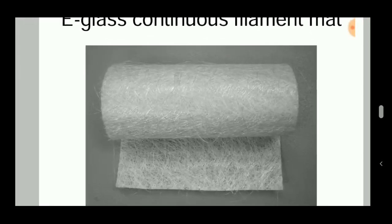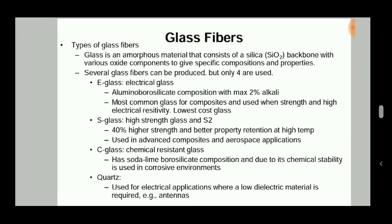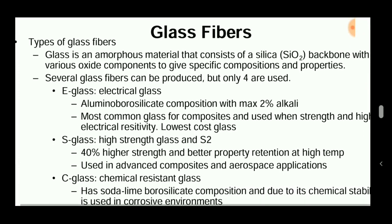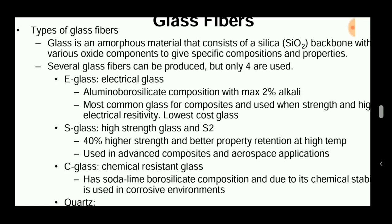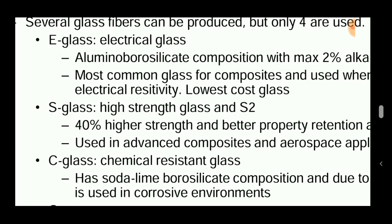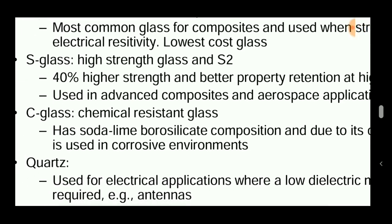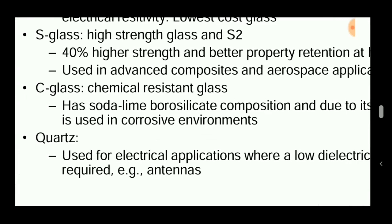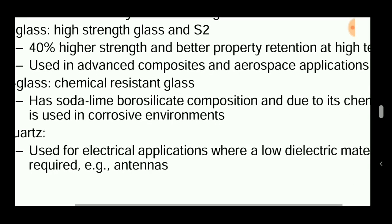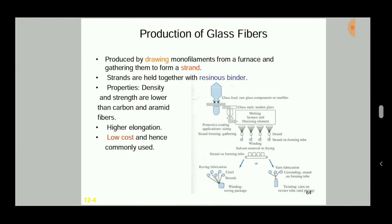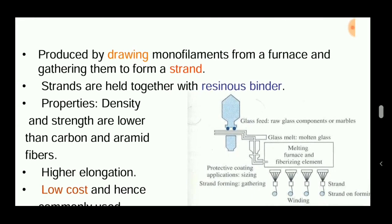Glass is an amorphous material consisting of a silica backbone with various oxide components. E-glass has an aluminum borosilicate composition with a maximum of two percent alkali. S-glass is a high-strength glass with 40 percent higher strength and better property retention at high temperature. C-glass is a chemical-resistant glass with a soda-lime borosilicate composition, able to withstand corrosive environments. D-glass is used for electrical appliances requiring a low dielectric material, such as antennas, electronic products like watches, etc.